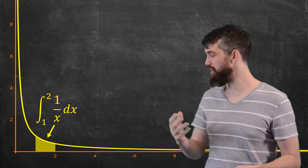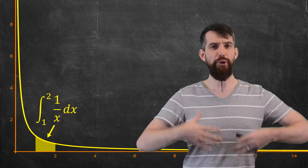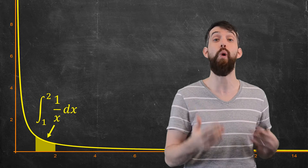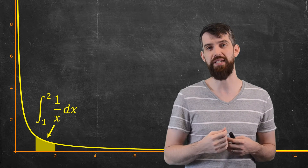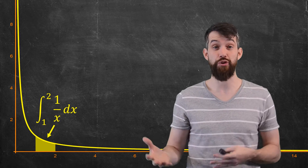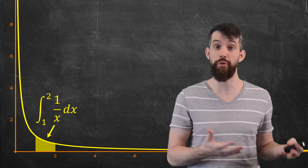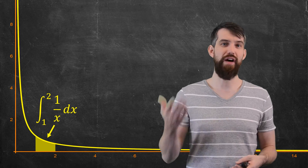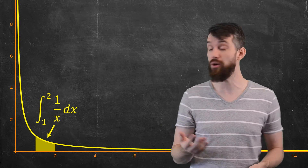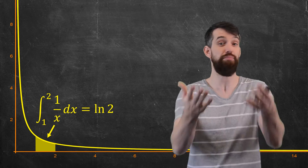If we focus on a particular region like between 1 and 2, the area under the curve is given by the definite integral from 1 to 2 of 1 over x dx. This integral is reasonable to compute. An antiderivative for 1 over x is the logarithm of the absolute value of x. Evaluating at 2 and at 1, since logarithm of 1 is 0, this equals the logarithm of 2. It's computable.